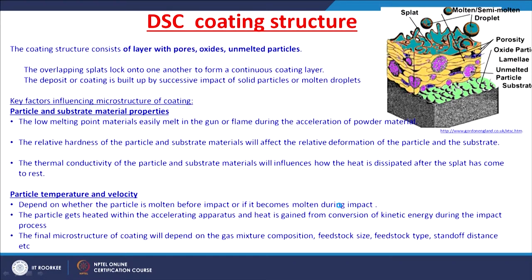The coating structure is generally a layered structure with pores, oxides, and unmelted products. These are different layers called lamellae, and you can also see certain pores. The coating is done layer by layer — molten or semi-molten material impacts on the substrate and becomes a splat. The overlapping splats lock onto one another to form a continuous coating layer.